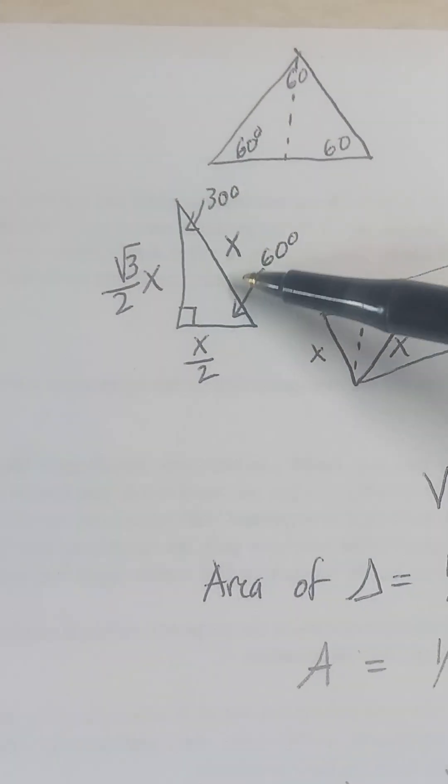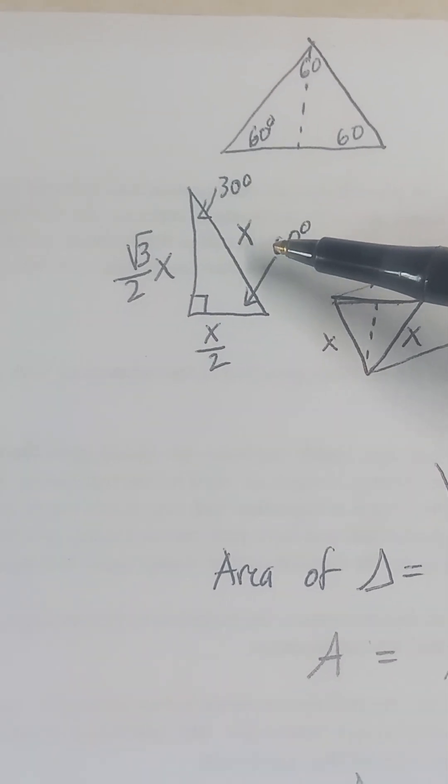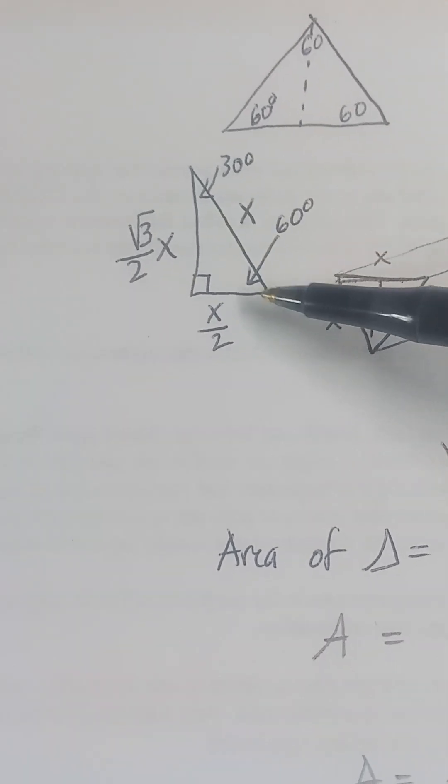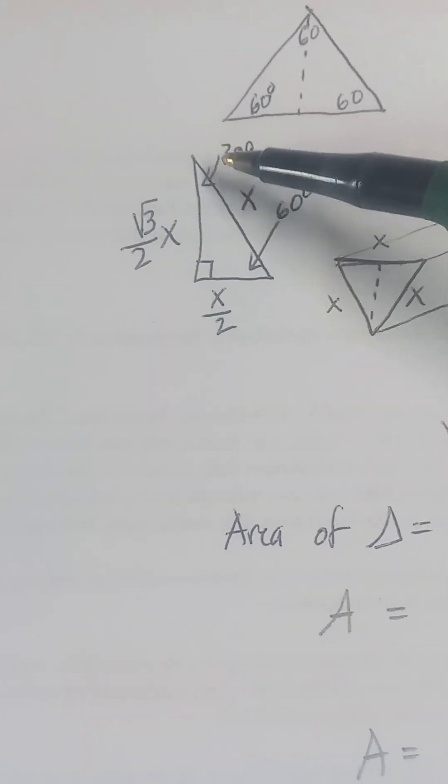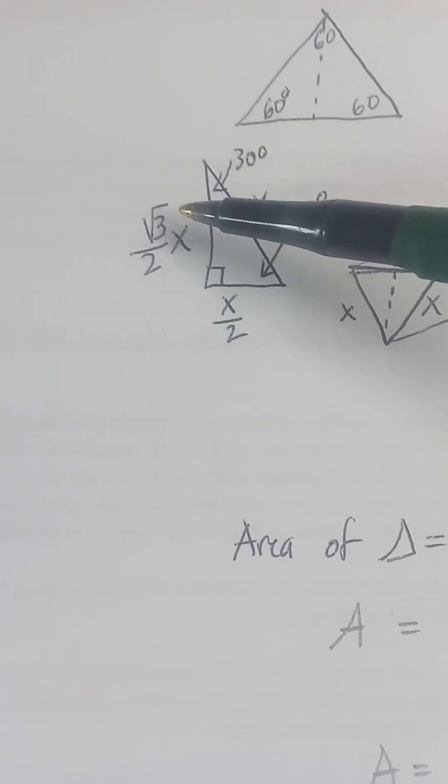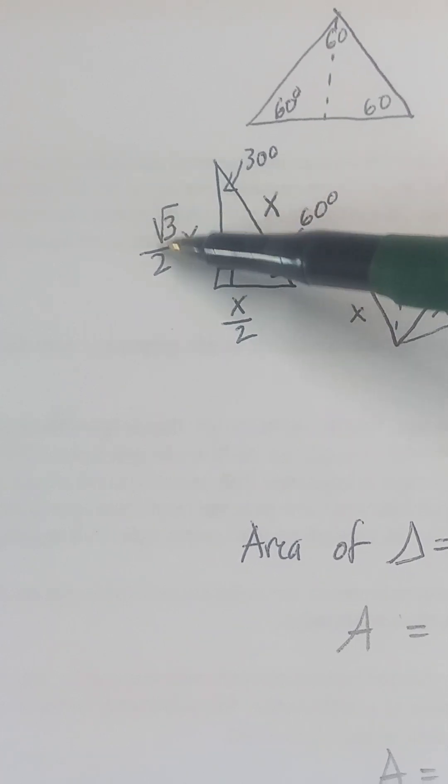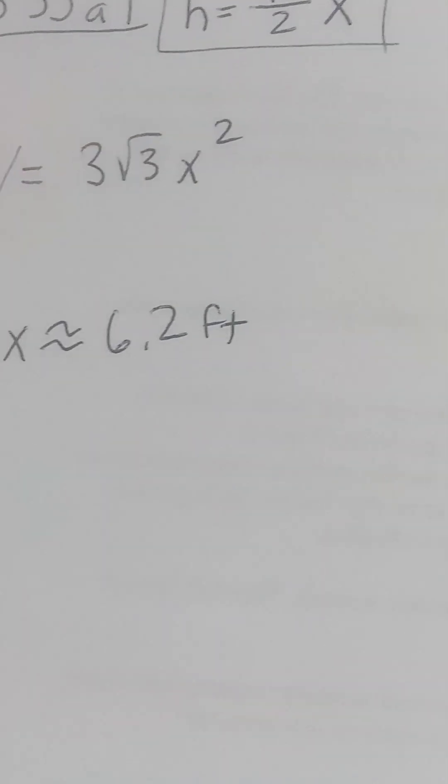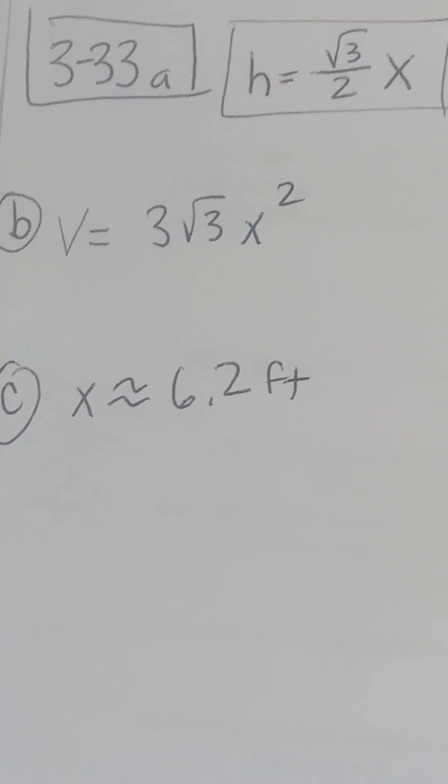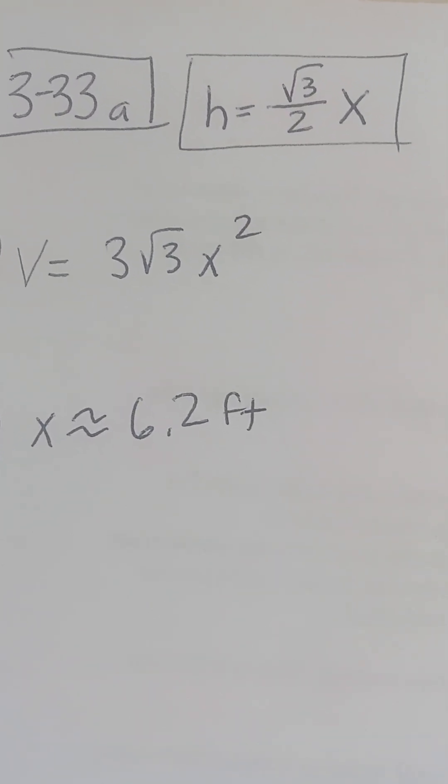In this case, the hypotenuse is X, so the short leg is X over 2. The long leg is root 3 times X over 2, which I wrote as root 3 over 2 X. That's the answer to letter A.